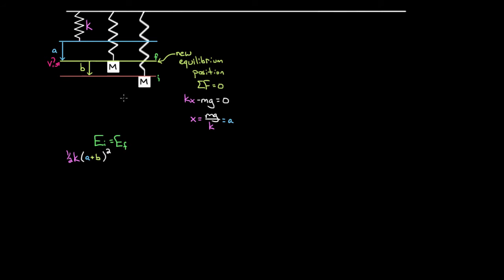How much gravitational PE do we start with? We can choose our H equals zero reference line. I'll choose the lowest point — where the mass starts — as H equals zero. That's allowed because only differences in gravitational PE matter. With that choice, the initial height of the mass is zero, so the initial gravitational PE is MGH equals zero. So the total initial energy is just the spring PE: one-half K times (A+B) squared.